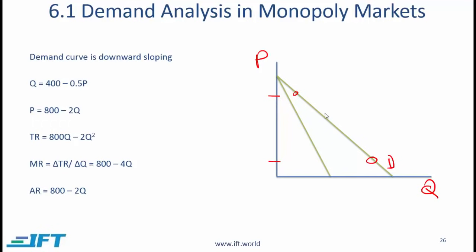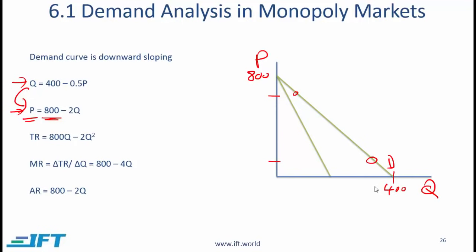So this is the demand curve. Let's say the demand curve is represented by this equation. We can rewrite it with price as the subject of the formula, and if we rewrite the demand equation this way, we can see that the intercept is 800 and the quantity intercept will be 400.